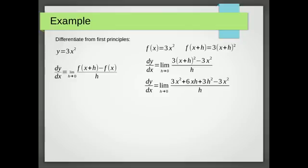And with polynomials, you're always going to be able to cancel out the original y term, the 3x squared. And you can see that those cancel out to give us this. At this point, again, with polynomials, we're always going to be able to divide out the h. And then we've got this.